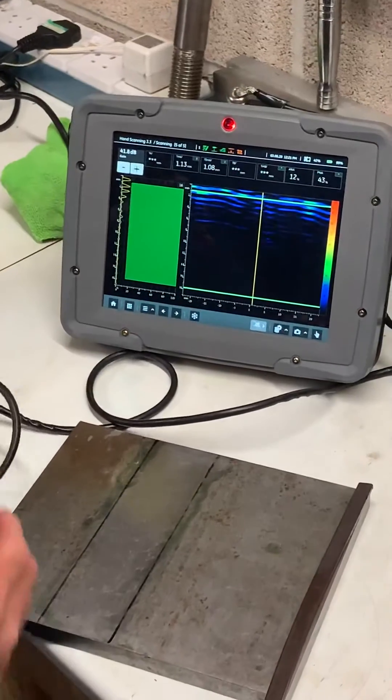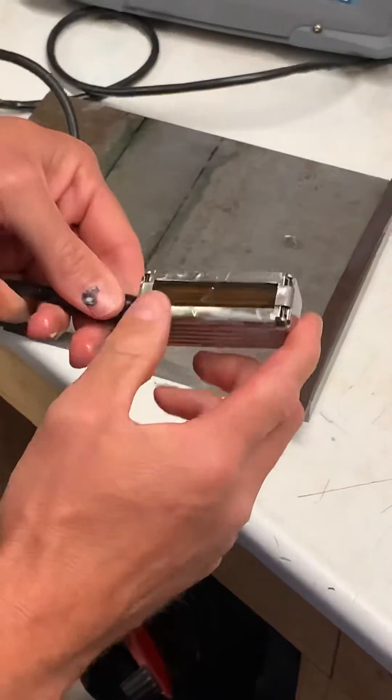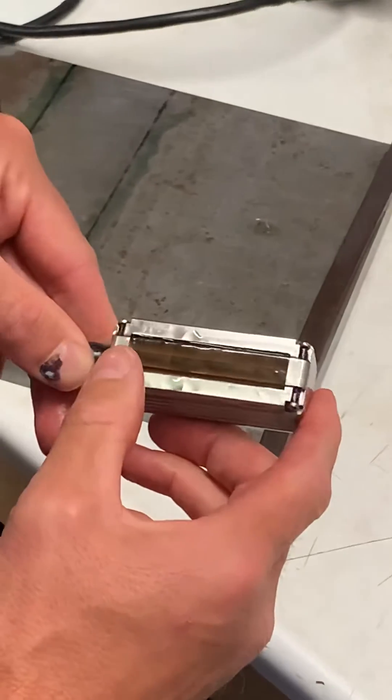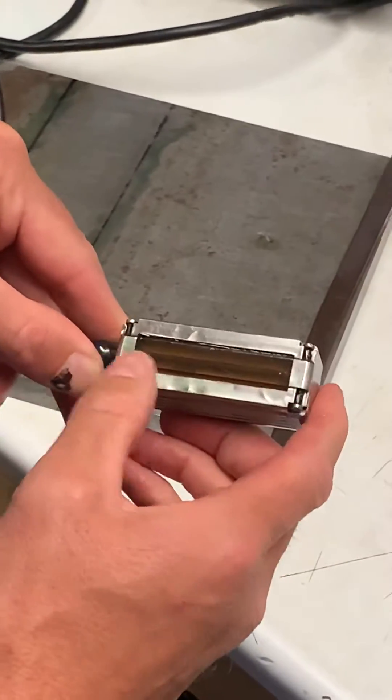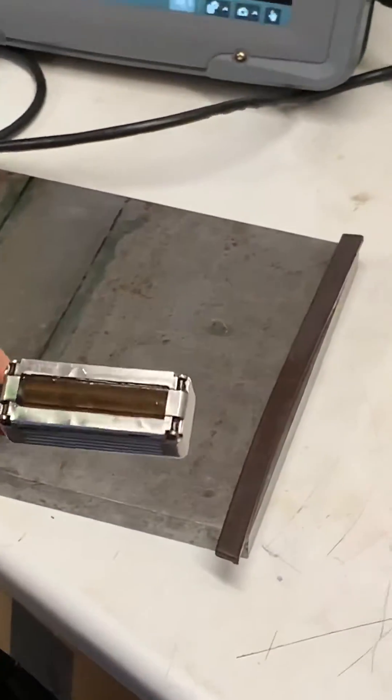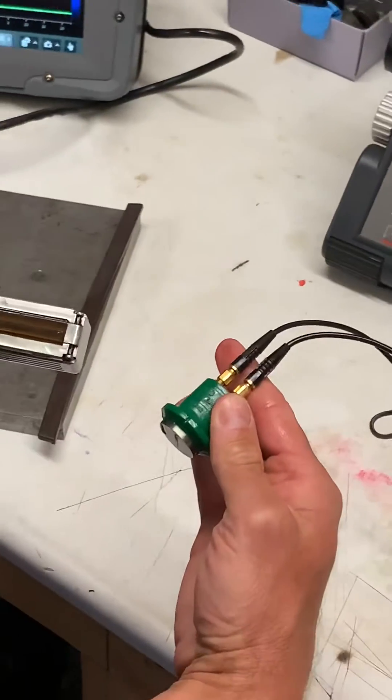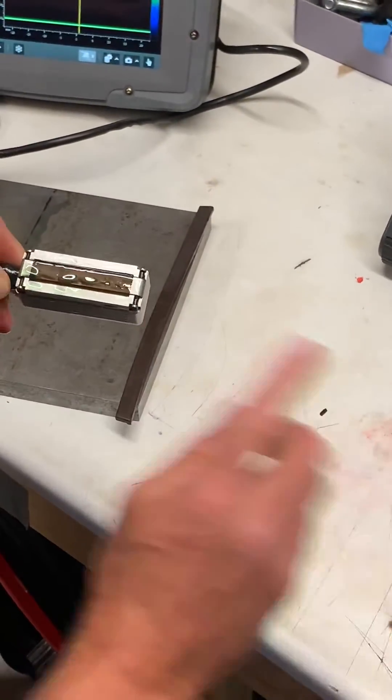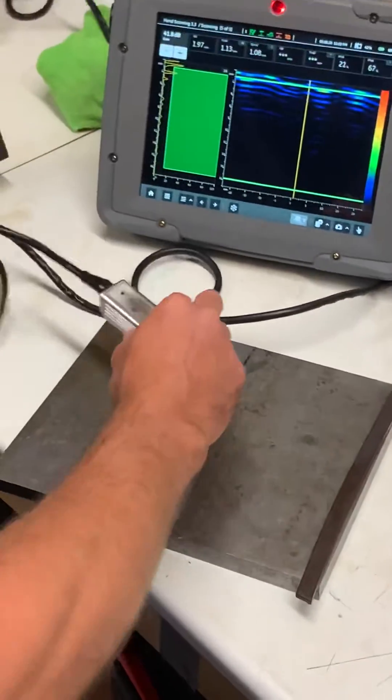Now we've got a 32 element dual matrix phased array probe, so it's got 32 sending and 32 receiving, similar to this twin send receive sort of probe but it's an array with 32. We stick it on the plate and we can see this red line here is from our back wall.